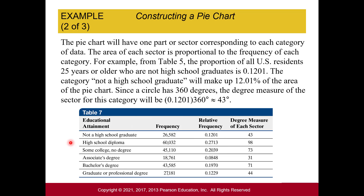Using the 2017 education data, for example, the category 'not a high school graduate' has a relative frequency of 0.1201, or 12.01%. Multiplying by 360 gives a 43-degree angle for that slice. The biggest slice is high school diploma with 98 degrees, since it has the highest frequency and relative frequency. Knowing the degree measures allows you to draw the pie chart by hand with a protractor.